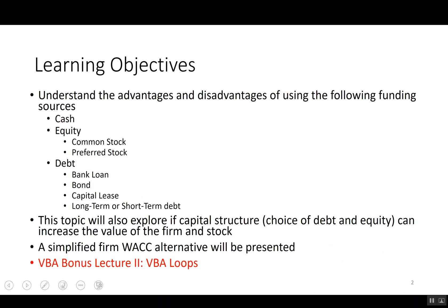In this topic, we're going to understand the advantages and disadvantages of using cash, equity, and debt to finance an investment or finance the entire firm. We'll also explore if capital structure can be used to increase the value of the firm — in other words, is there an optimal capital structure? We'll relate it to that topic, see if there's a simplified way of calculating WACC, and then as a bonus lecture, we'll talk about VBA loops.